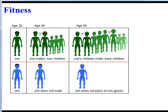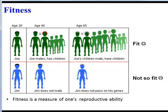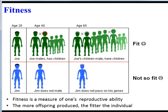This leads to the concept of fitness. Organisms with adaptations have more fitness. But in biology, fitness doesn't refer to how strong or muscular an organism is — it refers to an organism's ability to reproduce. Let's take a look at Joe and Jim. Joe and Jim are equally strong, fast, and healthy. But Joe mates, has children, and those children mate and have more children. Meanwhile, Jim chooses not to mate and doesn't pass on his genes to any offspring. Because of this, Joe is considered fit, and Jim is not fit at all. In evolution, fitness is a measure of one's reproductive ability — the more offspring you have, the more genes you pass down, the fitter you are.